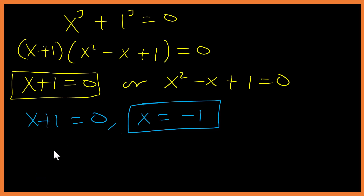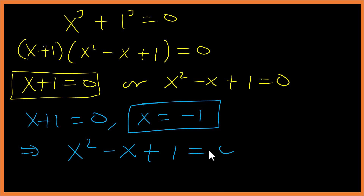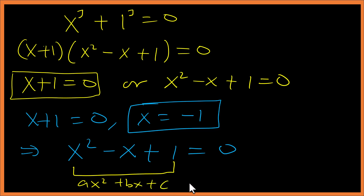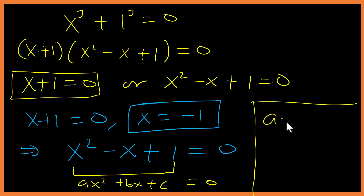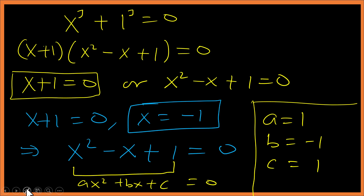Now let's find the other two solutions from x squared minus x plus one equals zero. We compare this to the general quadratic equation ax squared plus bx plus c equals zero. From this we identify a equals one, b equals negative one, and c equals one.